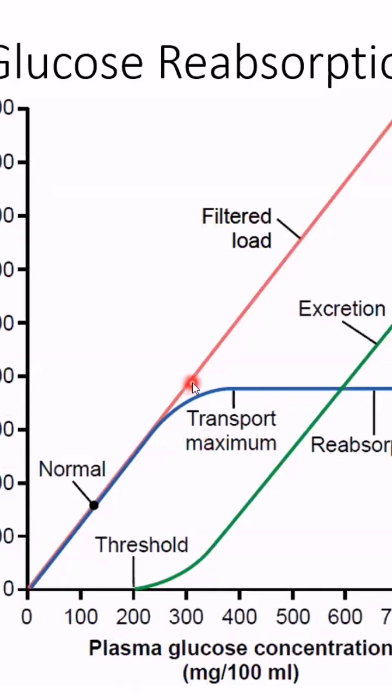Whether it's the red, the blue, or the green curve — are you looking at filtered glucose (i.e., the load), are you looking at reabsorption of glucose, or are you looking at excretion? All three are given as a function in milligrams per minute.